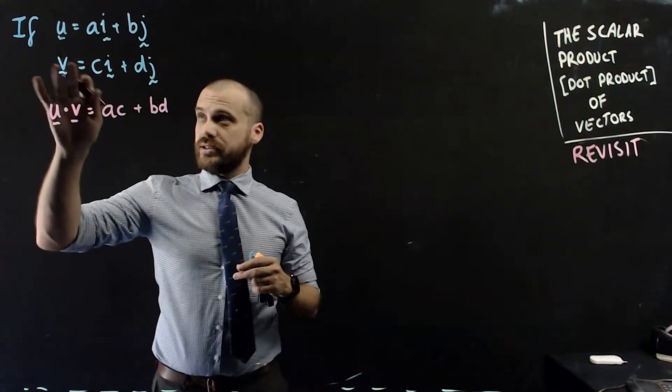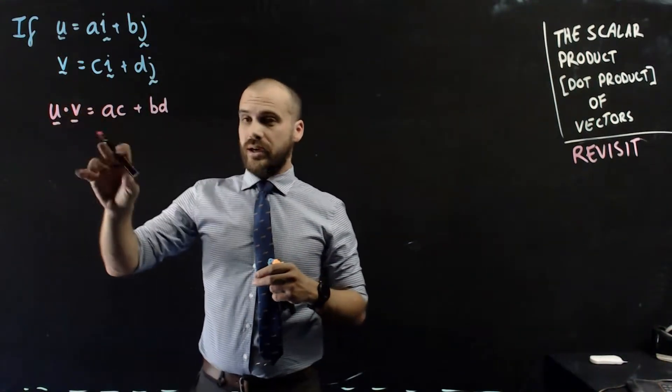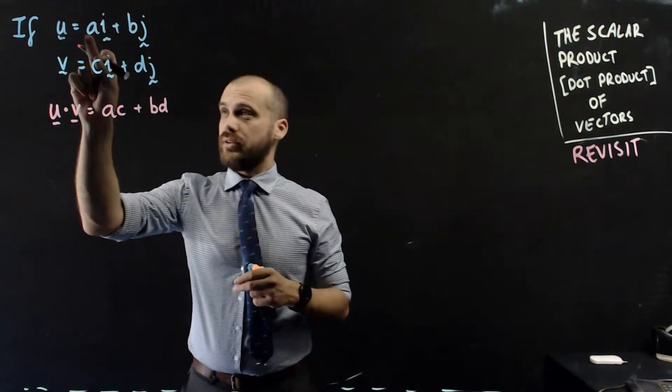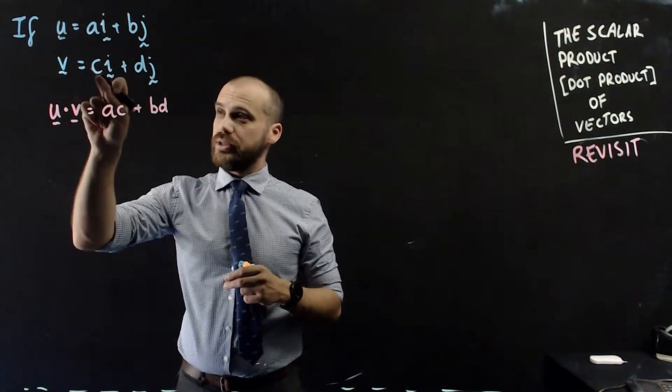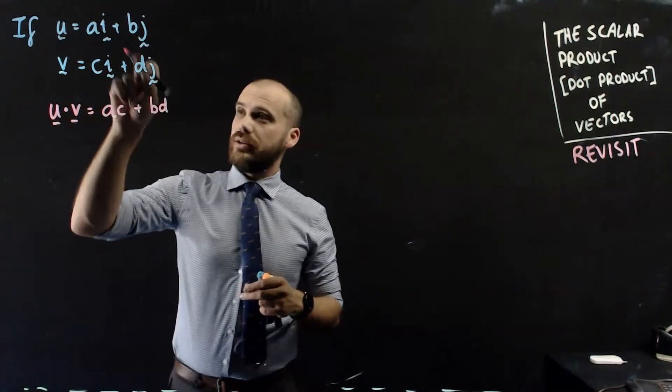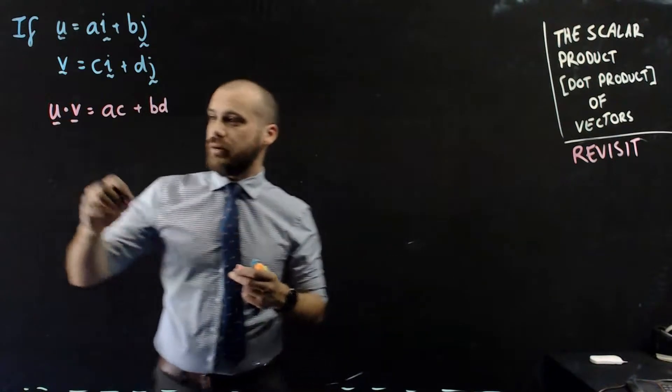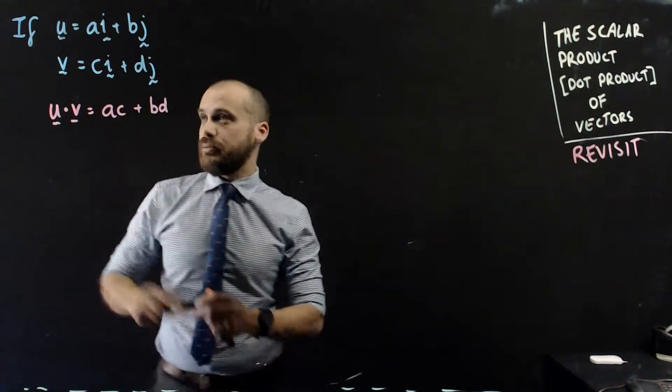Here's our first little formula. If there's two vectors, u and v, the dot product of those two vectors is going to be the i components multiplied together plus the j components multiplied together. And that's just going to give you a number.